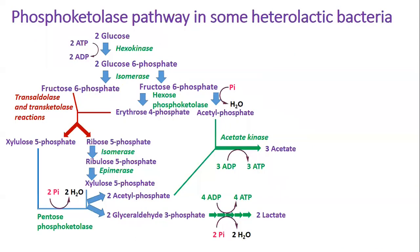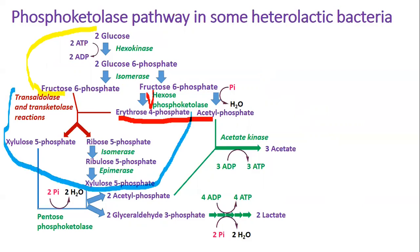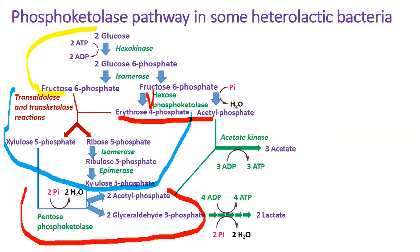Some heterolactic bacteria may convert glucose and other sugars into fructose-6-phosphate, which is split into erythrose-4-phosphate and acetyl phosphate by hexose phosphoketolase. Erythrose-4-phosphate can be recycled through the transaldolase and transketolase reactions of the pentose phosphate pathway to form xylulose-5-phosphate, which is then split by pentose phosphoketolase.